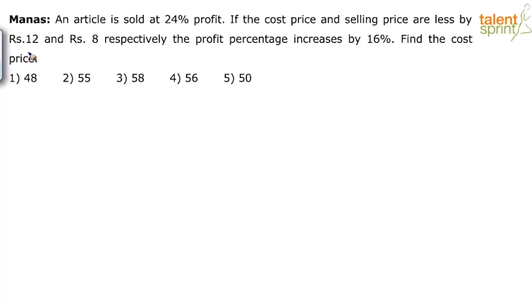So we have solved such questions many times in the past. You just have to write two equations for the selling price and solve those two to get the answer. So what will be the equation? The first statement says an article was sold at 24% profit.